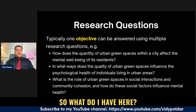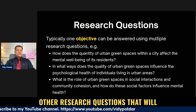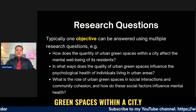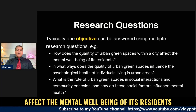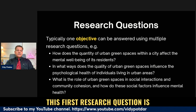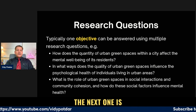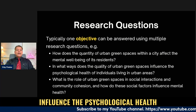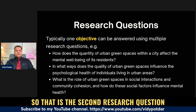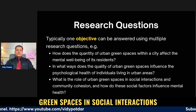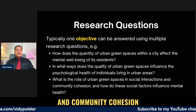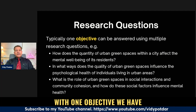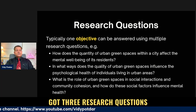Three research questions help answer this objective. First: 'How does the quantity of urban green spaces within a city affect the mental well-being of its residents?' Second: 'In what ways does the quality of urban green spaces influence the psychological health of individuals living in urban areas?' Third: 'What is the role of urban green spaces in social interaction and community cohesion, and how do these social factors influence mental health?' Starting with one objective, we have derived three research questions.